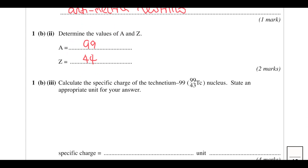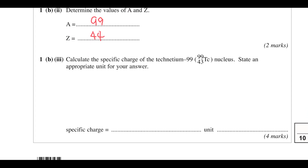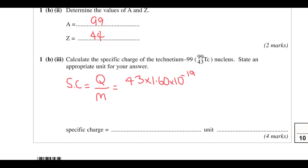Calculate the specific charge of a technetium nucleus. Specific charge is charge divided by mass. It's got 43 protons, so it's 43 times the charge of a proton — 1.6 times 10 to the minus 19 — and then there are 99 nucleons times 1.67 times 10 to the minus 27.